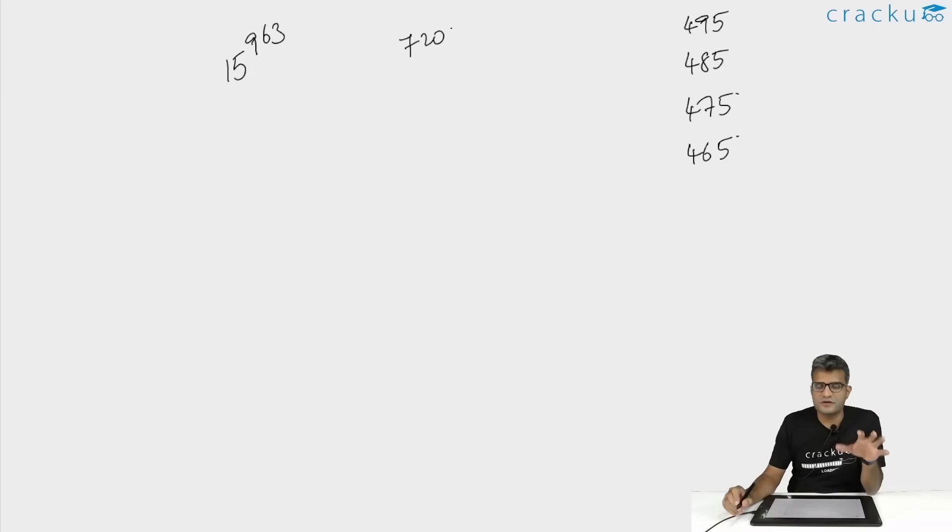Now if you are trying to solve this question without the use of options or if this is a TITA question, you will not be able to answer it using the shortcut. But because there were options given, I tried to figure out what is the best way to solve it. Now once I looked at it, I realized that 15 to the power 963, because 15 is a multiple of three, and 720 is a multiple of three, the remainder will be a multiple of three.